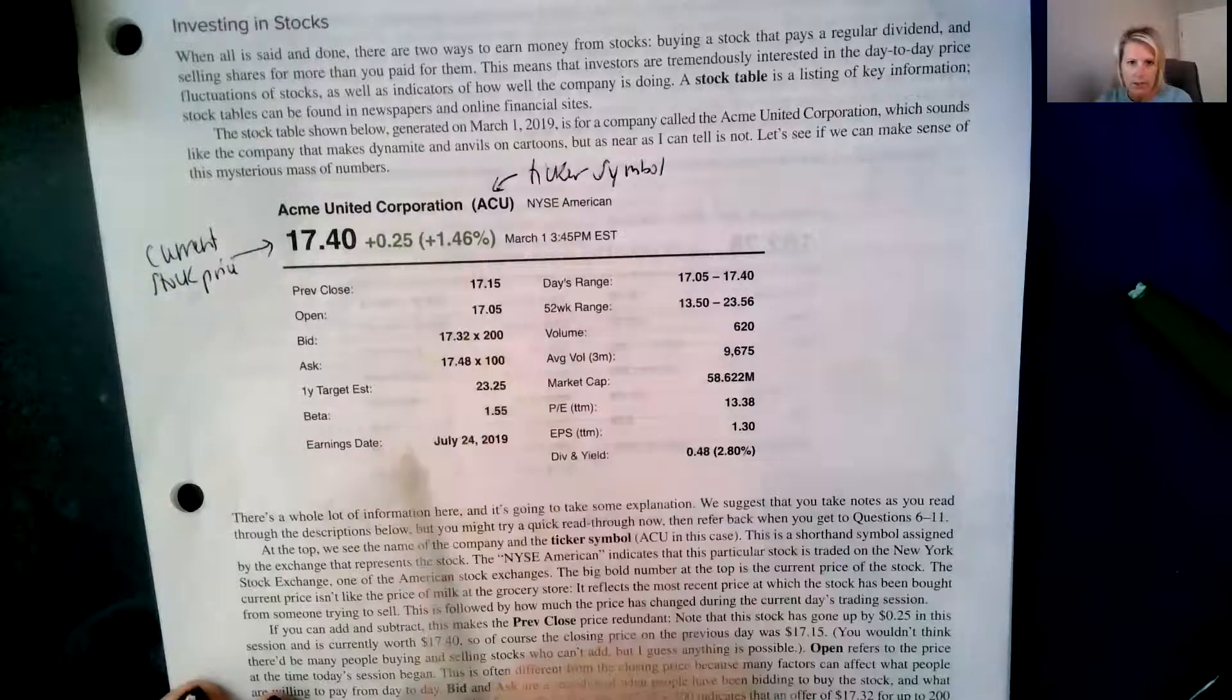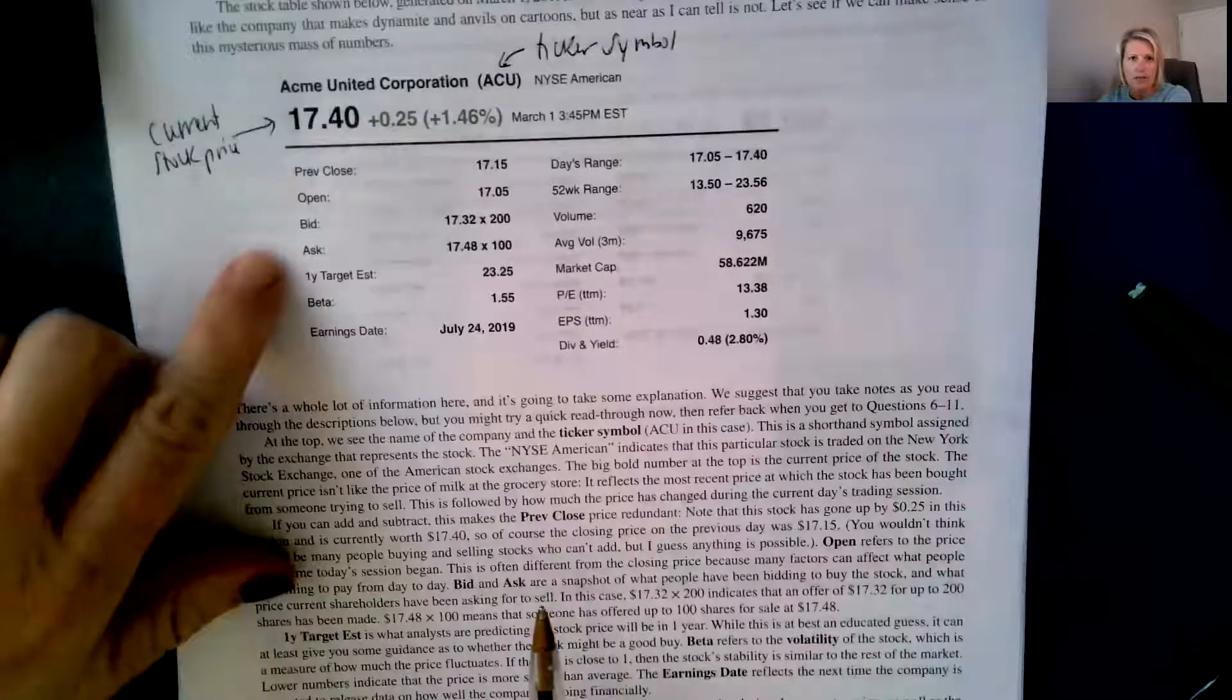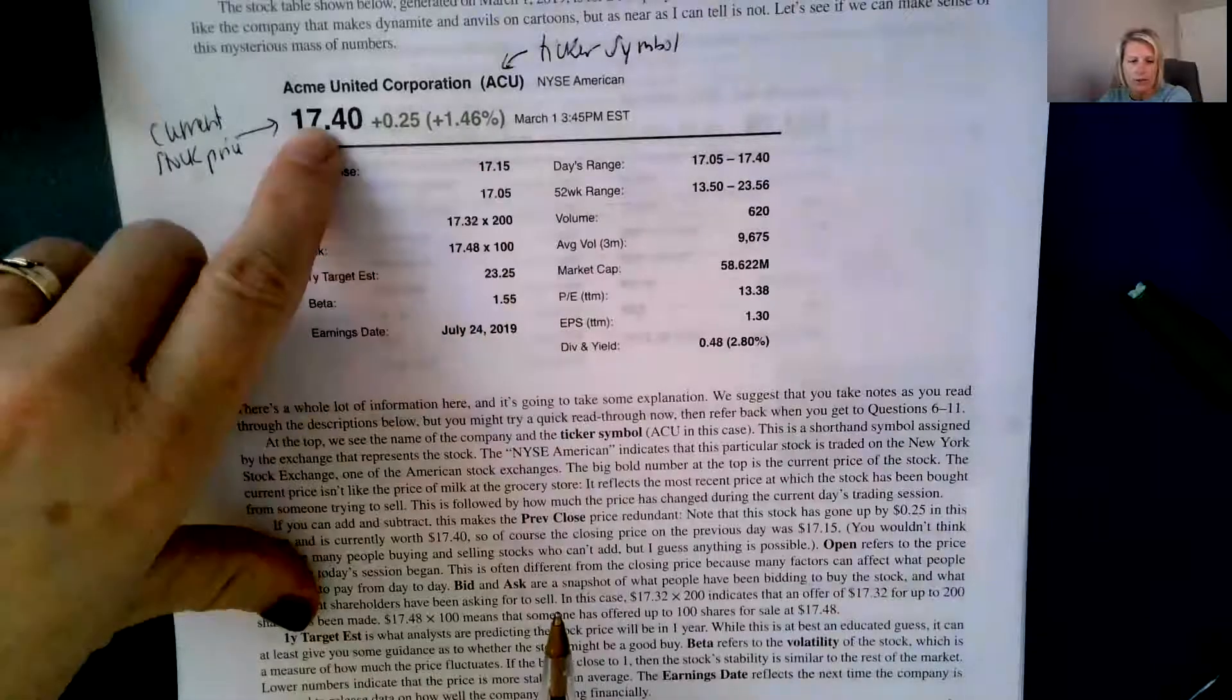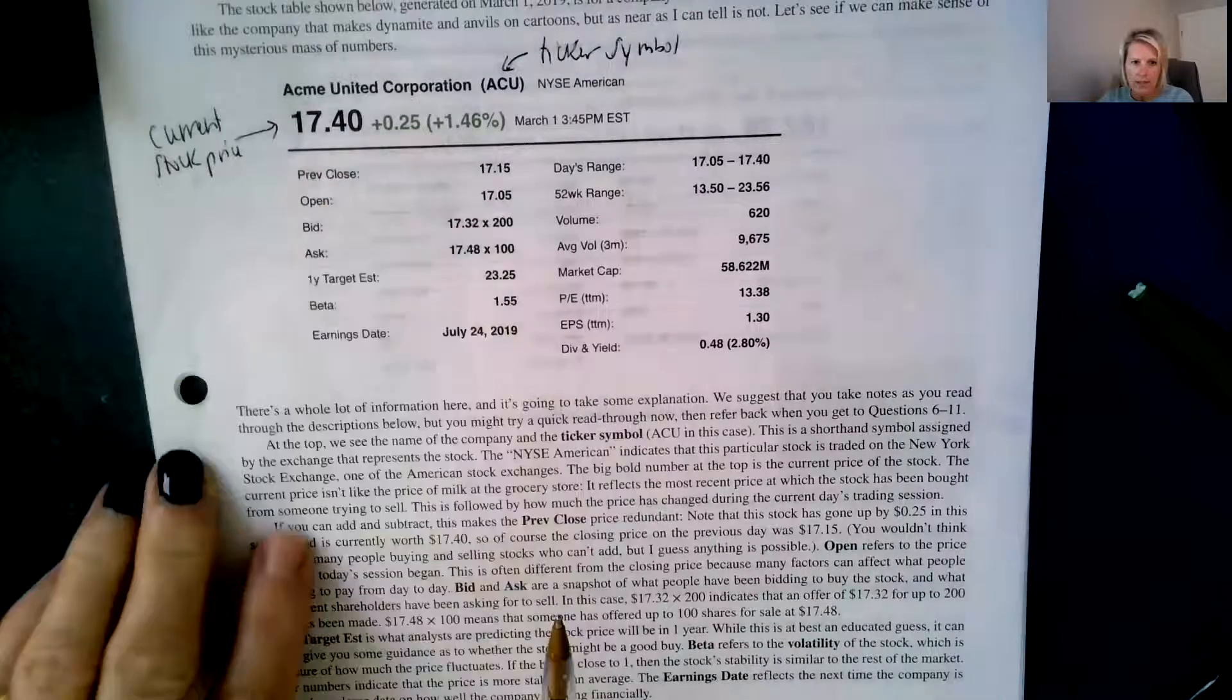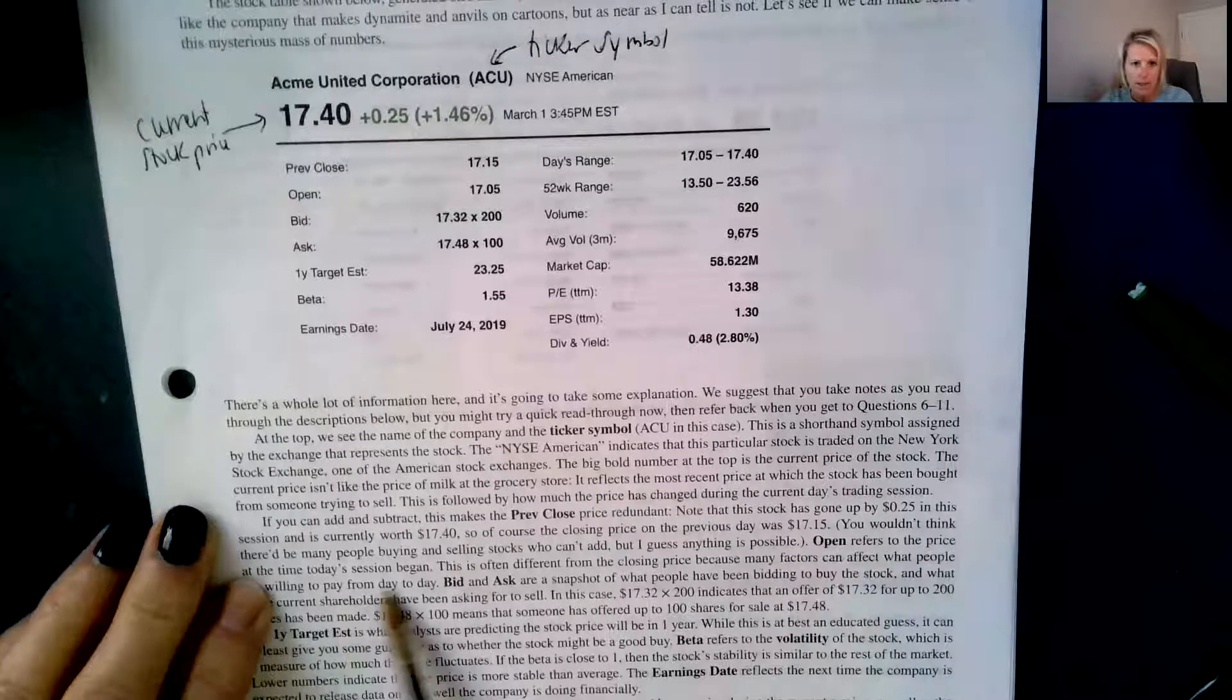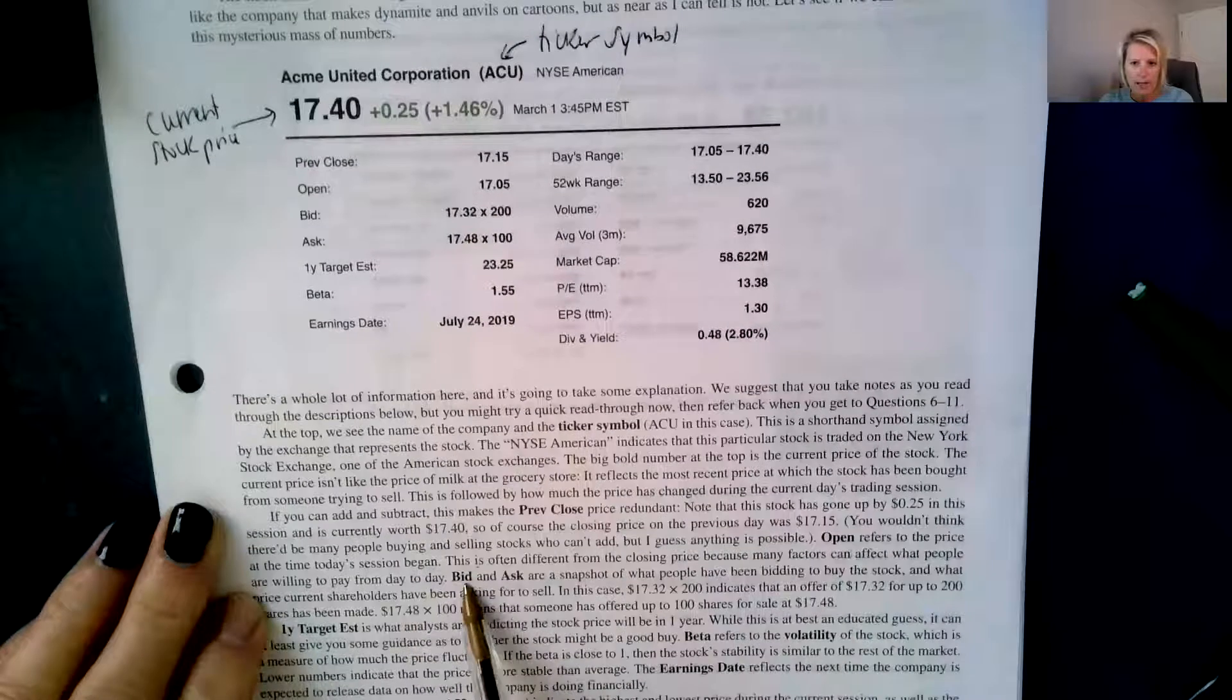So I'm just kind of going down here. The previous close is what it closed at the day before 1715. So that's why the difference between what it's currently at and the previous close is 25 cents. That's how they calculate that. The open refers to the price at the time today's session began. So it opened at 1705.